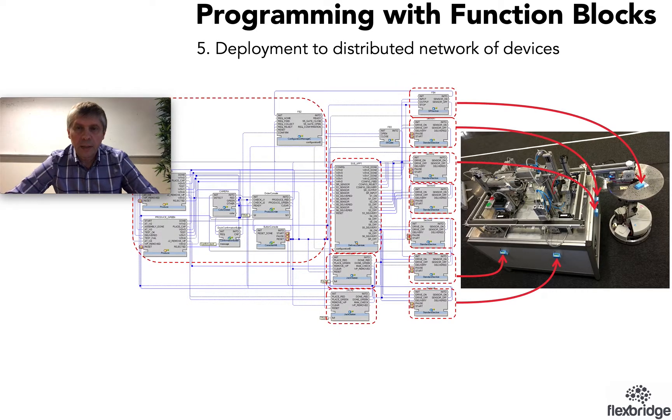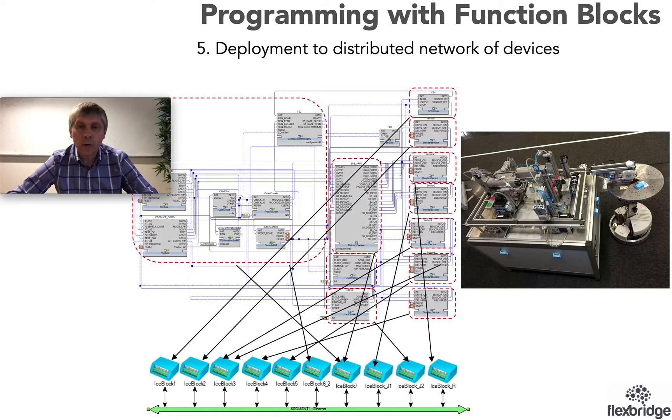Now the next step in the development of the system is to deploy function blocks to the devices that are connected to actual sensors and actuators. For that it's very simple. We just need to decide which function block where does it need to live and then we tell the software tool. We create this description of our system's hardware architecture and with that we define that this function block will be located in that hardware device.